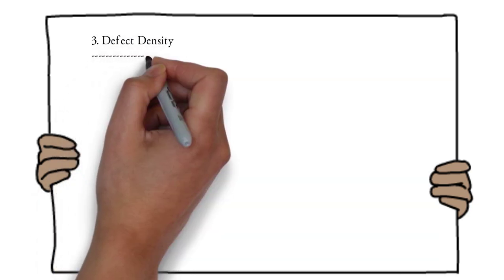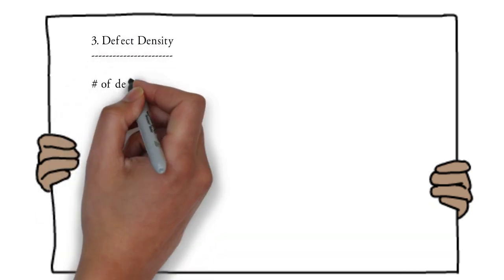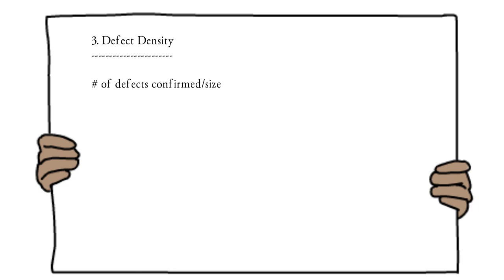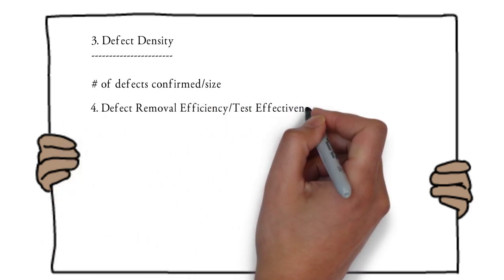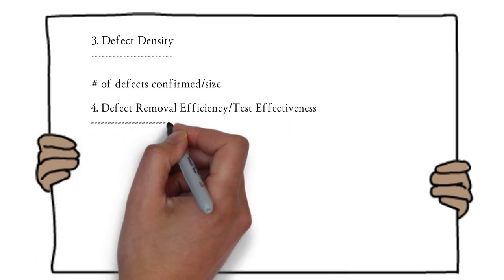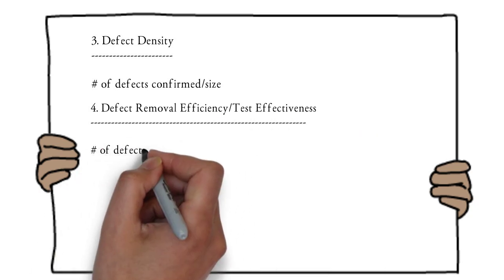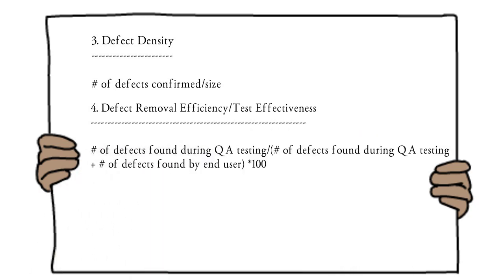The third calculated metric is defect density, which helps find out the volume of defects raised in a particular functionality or module. This is calculated using the formula: number of defects confirmed / size. The fourth metric is defect removal efficiency, also known as test effectiveness, which measures how many defects were removed during testing.